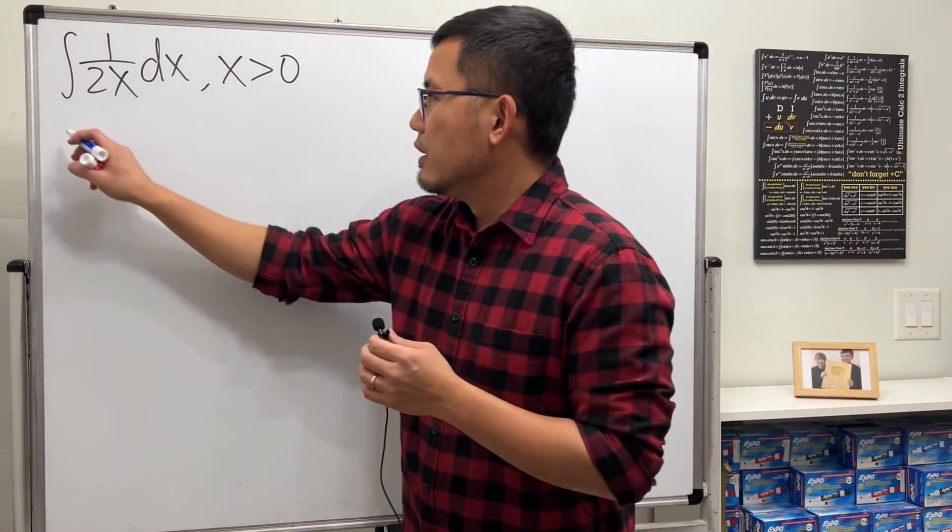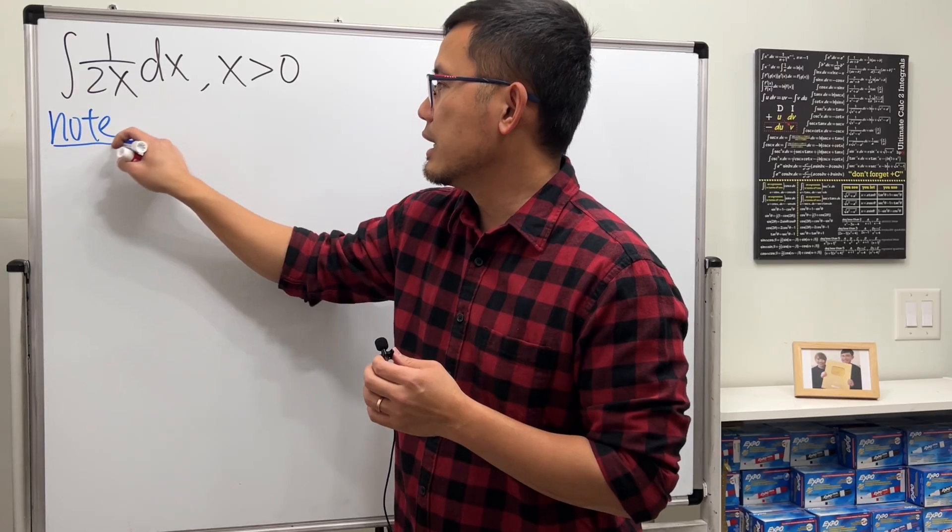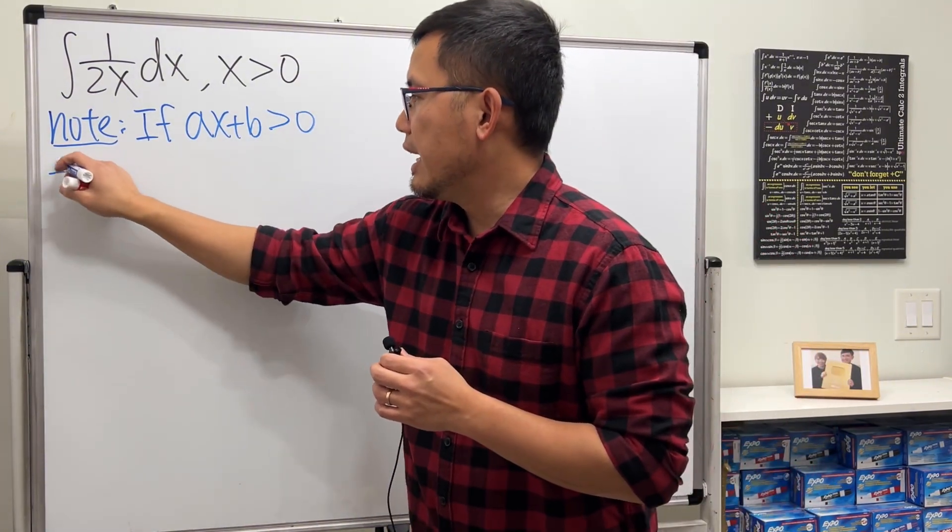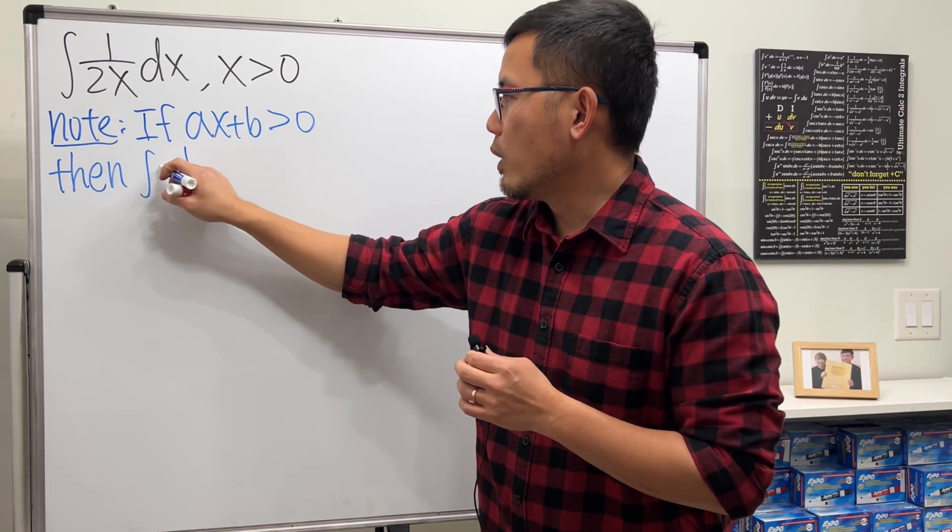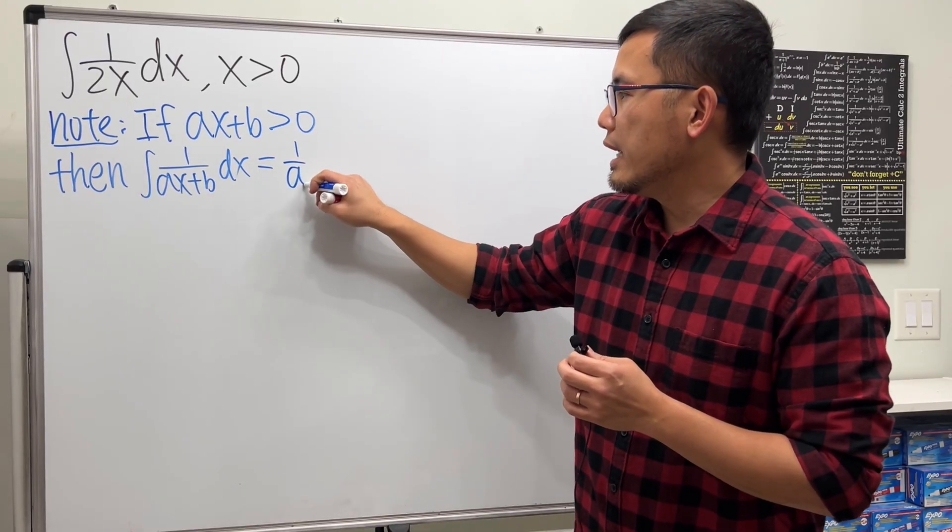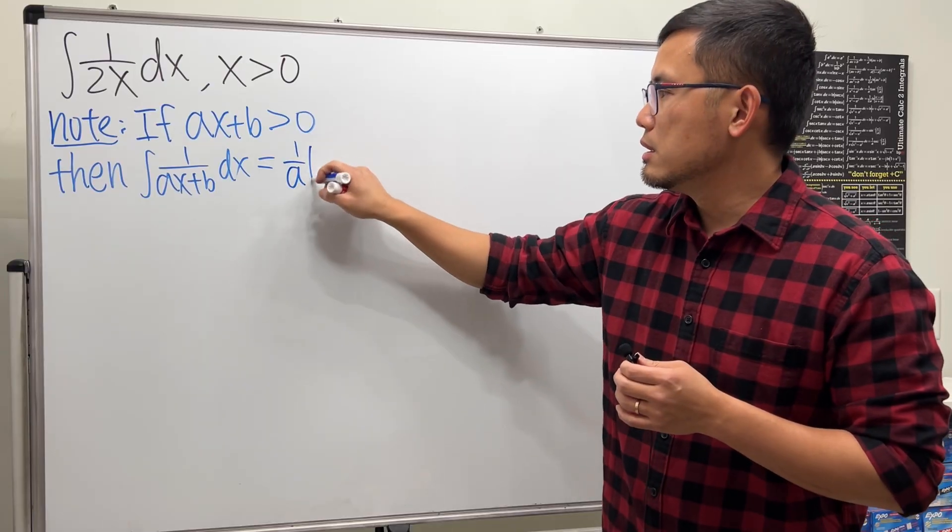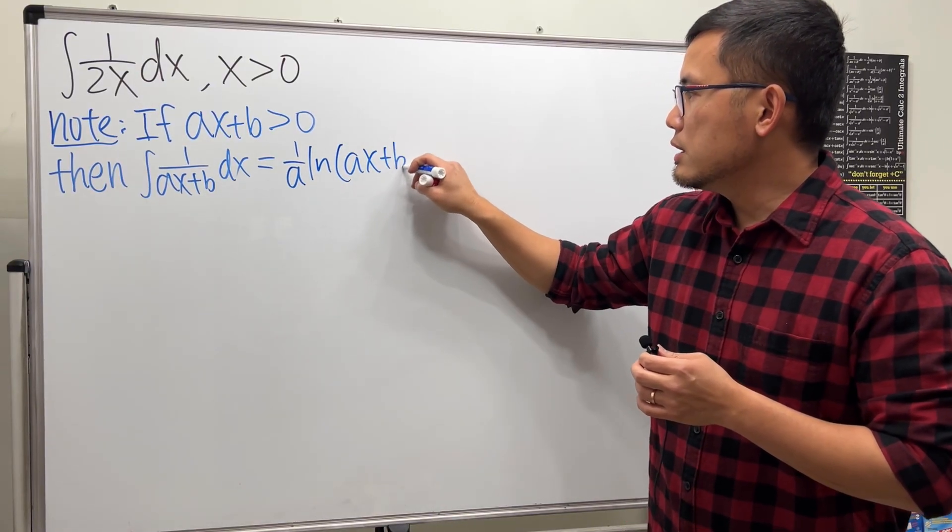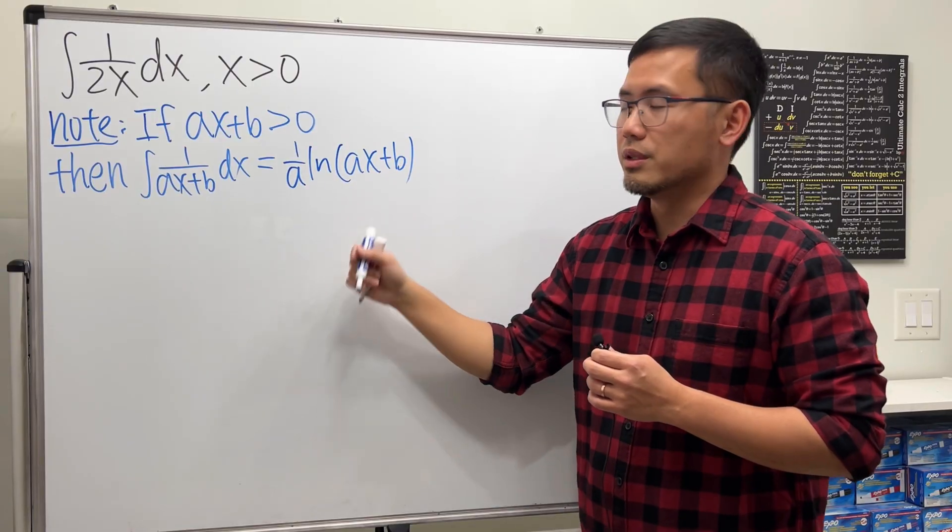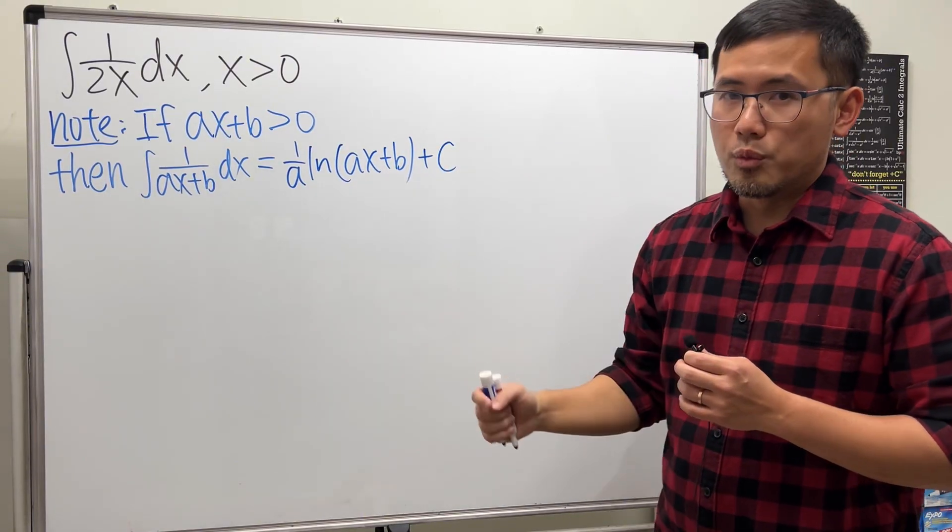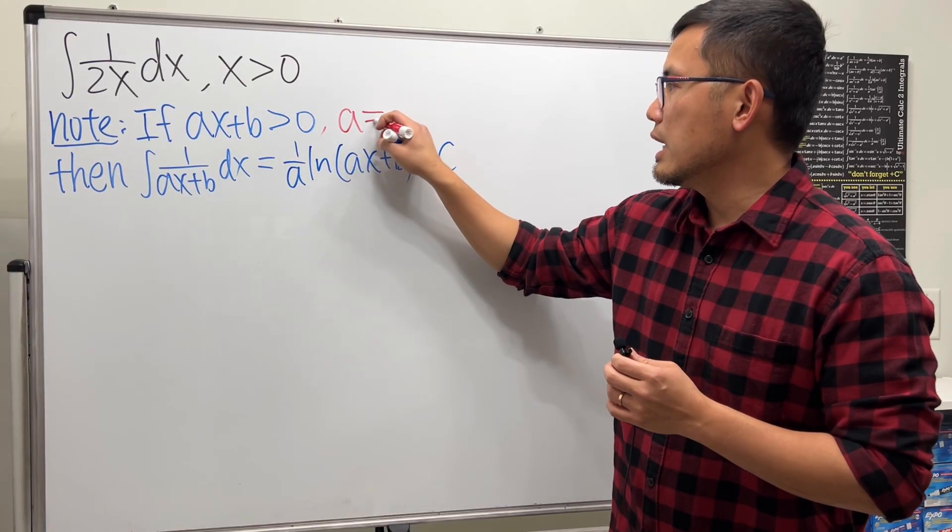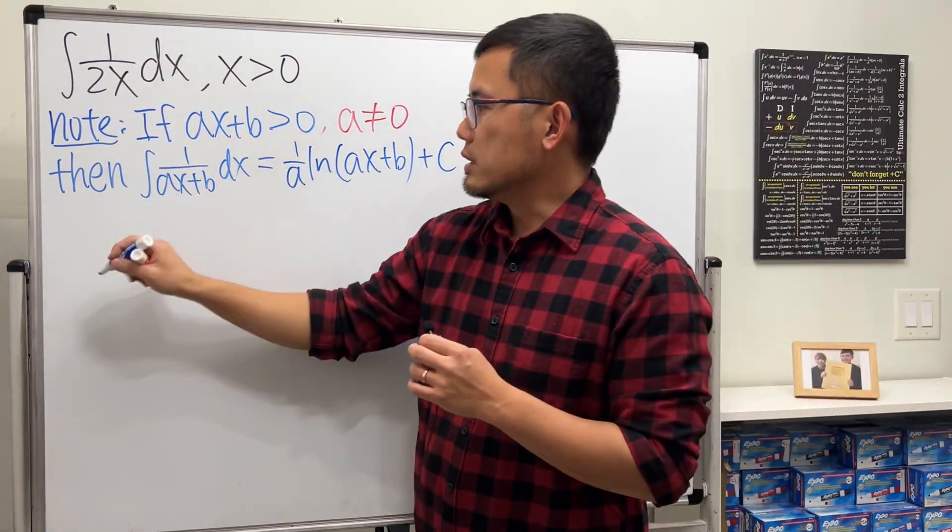So check this out. Firstly, there is a formula in the book that says the following: if we have ax+b being positive, then if you want to find the indefinite integral of 1/(ax+b)dx, this right here equals 1/a times the natural log (which is log base e) of ax+b. And notice here I'm not using an absolute value because we already have that this right here is greater than zero, so we are good. And of course lastly, right here, don't forget the plus C. So that's the formula. And here's a small touch: in order for this formula to be true, we also need to make sure that a cannot be equal to zero.